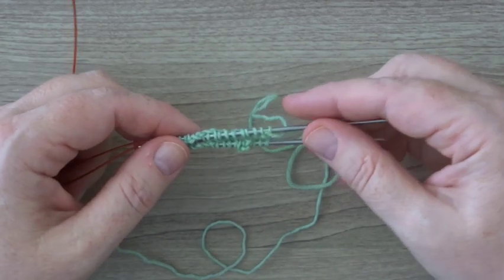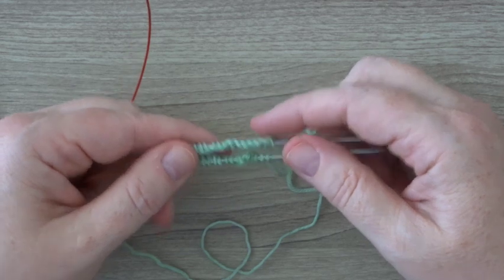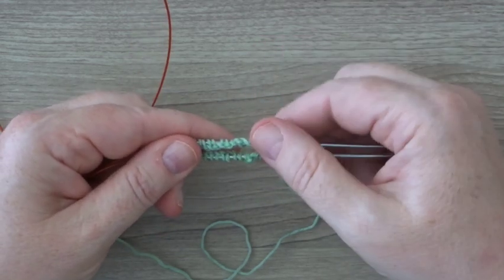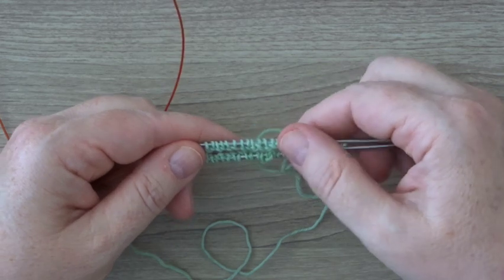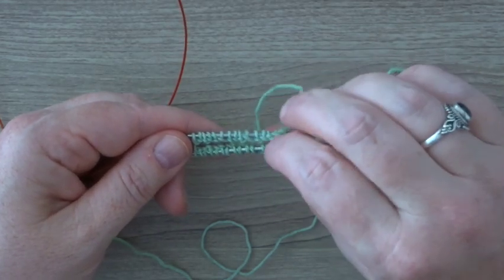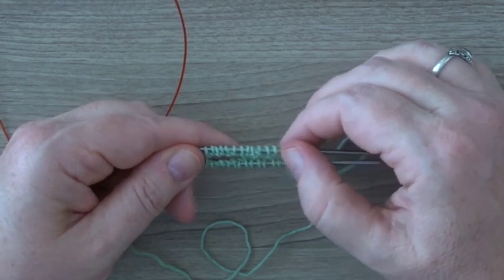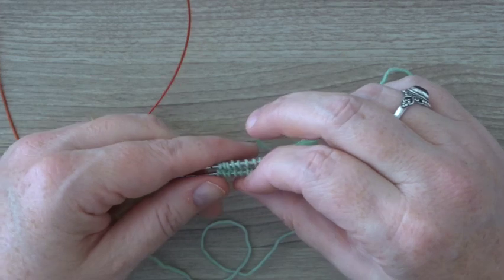Once you have cast on enough stitches, divide them in two and divide them over your two needles. We are going to unravel the slipknot by the way, so you don't have to count that as a stitch.